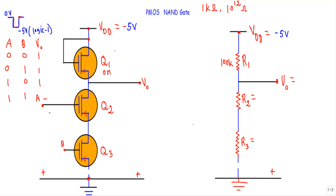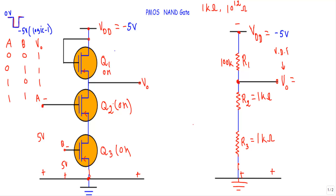Case four: A and B are both at logic one, so minus five volts is applied to both input terminals. Q2 and Q3 are both in the ON state, each with a channel resistance of 1 kΩ. Using the voltage divider rule, the output voltage equals (2 kΩ / (100 kΩ + 2 kΩ)) × (−5V), which is approximately minus 0.098 volts — very close to zero volts. Therefore, the output is at logic zero, confirming PMOS NAND gate behavior.